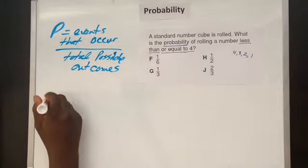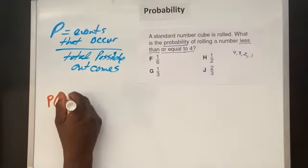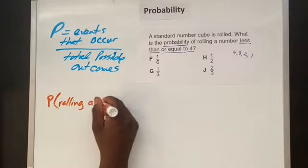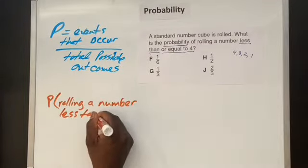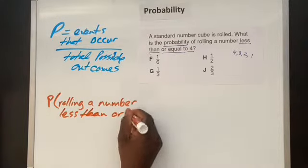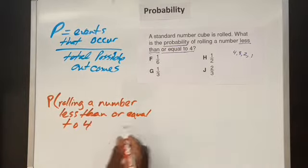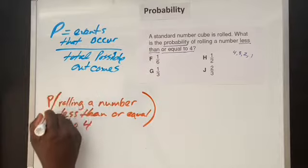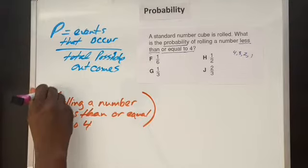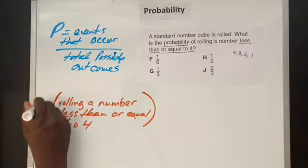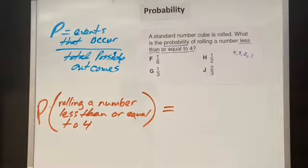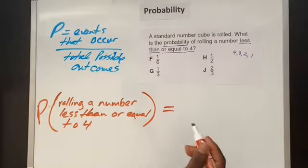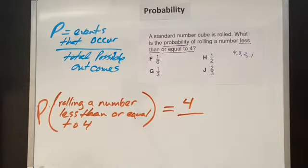So let's see how we can solve this problem using the formula that's provided. We're going to represent the formula as the probability of rolling a number that is less than or equal to four. Now, when we think about that, what are the events? How many events can satisfy this condition? Well, we have four, three, two, and one.